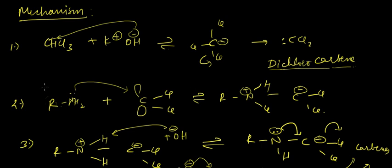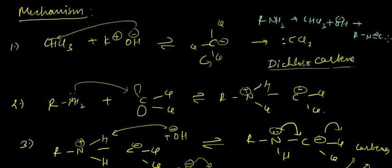In this lecture we'll be discussing the mechanism of the isocyanide test or carbylamine reaction. In the carbylamine reaction, a primary amine (one degree amine) is converted into isocyanide. The root reaction, as discussed in the previous lecture, is RNH₂ in chloroform and basic medium being converted into RNC.